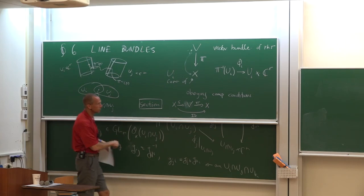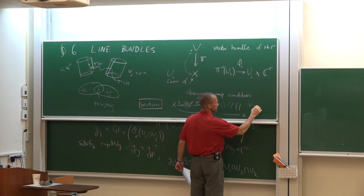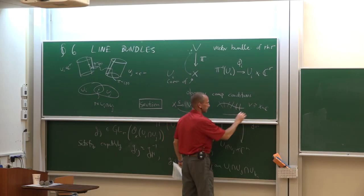Pictorially: if the base X is one-dimensional and the fibers are one-dimensional — so a line bundle is a vector bundle where the fiber is dimension one — then v locally looks like X cross C, and a section is something that for each point p picks a point up in the fiber above it. Each point goes to a little point up there.